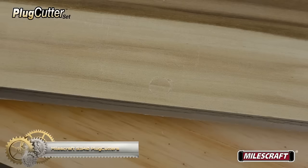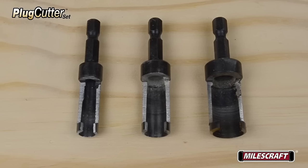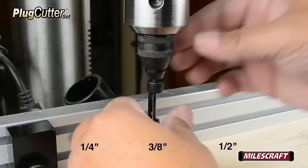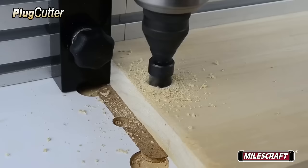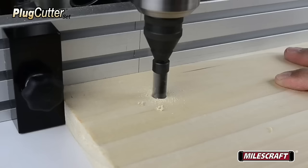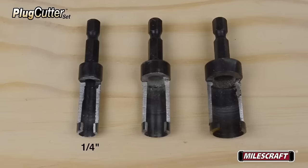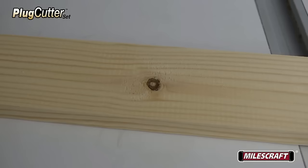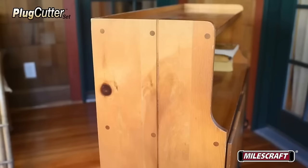The MilesCraft plug cutters offer versatility with three plug cutters in sizes of 1/4 inch, 3/4 inch, and 1 inch, crafted from durable high-speed steel. They feature a 1/4 inch hex shank for easy compatibility with standard drills, making them user-friendly. These cutters are ideal for creating tapered plugs by drilling a hole in the wood, inserting the cutter, and pushing down and pulling up to remove the plug. They serve various woodworking purposes, including filling screw holes, repairing damaged wood, and crafting decorative plugs. With their ease of use, durability, precision in creating snug-fitting tapered plugs and versatility, the MilesCraft plug cutters are a valuable addition to any woodworking tool kit, simplifying processes and enhancing your projects.